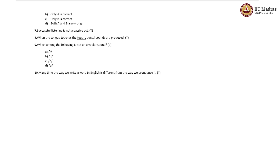The tenth and final question: many a time, the way we write a word in English is different from the way we pronounce it. The statement is true. For example, the first letter of the word 'apple' is A, but A is not pronounced as 'ay' in 'apple' — we say 'apple,' not 'aypple.' It is pronounced as 'æ.' So the oral sound that stands for the letter A is 'æ,' demonstrating that the way we write a word is different from the way we pronounce it.